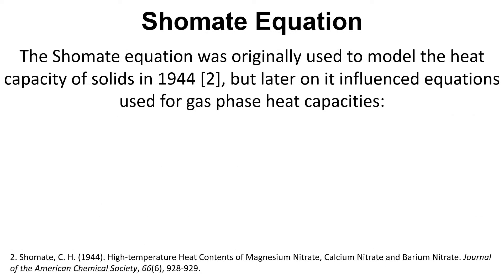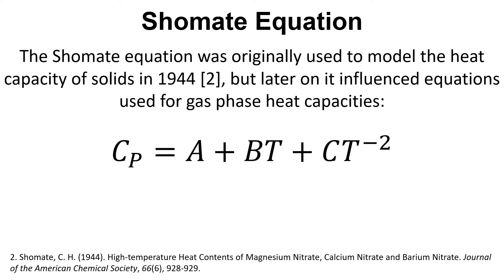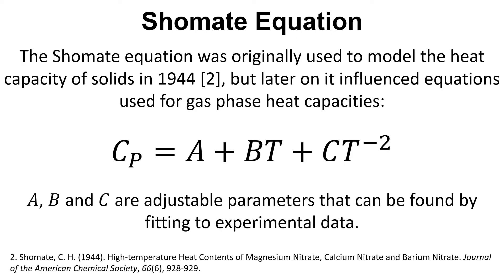Let's start with the Shomate equation. This was originally used in 1944 to model the heat capacity of solids, but later on it has influenced the equations that are used for gas phase heat capacities. It is of the form Cp equals A plus BT plus CT to the minus 2, where T is the temperature and A, B, and C are adjustable parameters that can be found by fitting to experimental data.